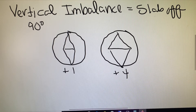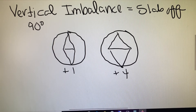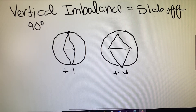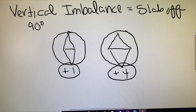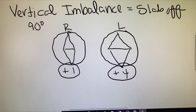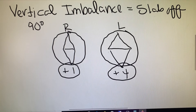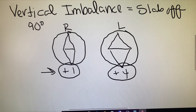Vertical imbalance in a patient's prescription only applies when there are two factors in play. Number one, we have to have a fairly significant difference in prescription from right to left. In our example we're dealing with a plus one lens on the right and a plus four on the left — so right and left as if we are looking at the patient. The first condition is a large difference: more than two diopters of difference between the right and the left eye.